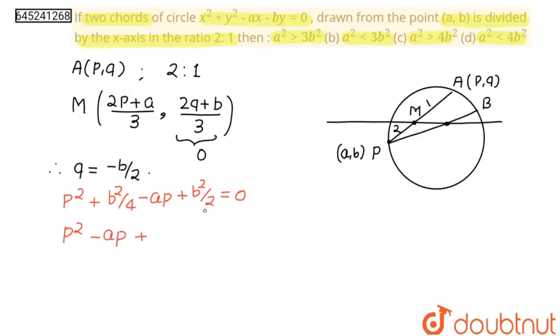Now if you see this, this is quadratic in p. From here, p² - ap + 3b²/4 = 0.